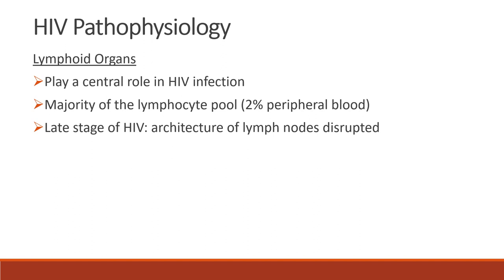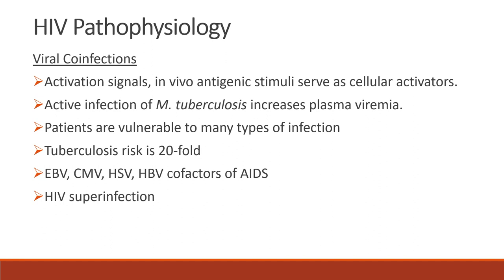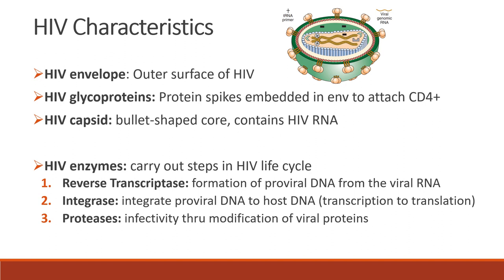In the lymphoid organs, these organs play a central role in HIV infection, affecting the majority of the lymphocyte pool — about 2% in the peripheral blood. In the late stage of HIV, the architecture of the lymph nodes is disrupted. In viral co-infections, in vivo antigenic stimuli serve as cellular activators. Active infection of Mycobacterium tuberculosis increases plasma viremia, and tuberculosis risk is 20-fold. Epstein-Barr virus, cytomegalovirus, herpes simplex virus, and hepatitis B virus are co-factors of AIDS and can also produce HIV super-infection.